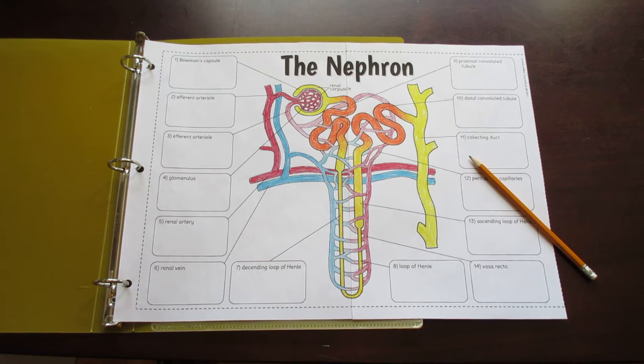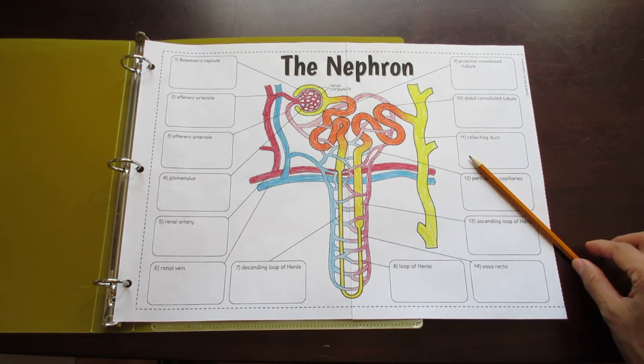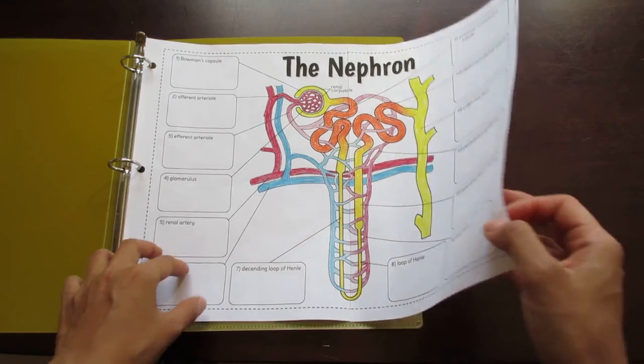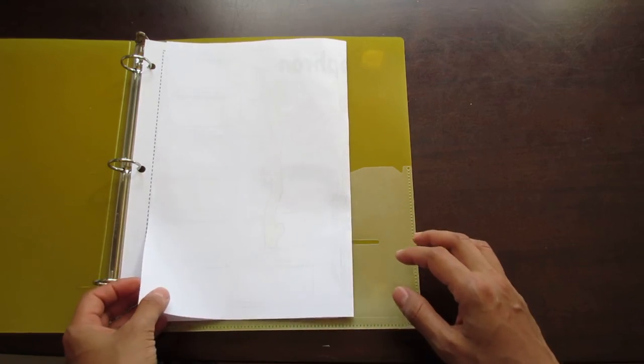This is the Tangstar Science Big Nephron Foldable. It's made up of two pieces of paper which when cut along the seams and taped together create a neat foldable that fits inside of a binder without overlapping the binder rings.